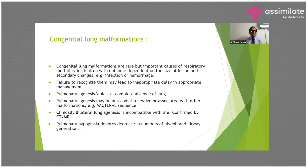Pulmonary agenesis or aplasia denotes complete absence of the lung. Pulmonary agenesis may be autosomal recessive and unassociated with other malformations. Bilateral lung agenesis is incompatible with life and is confirmed by CT scan and MRI.